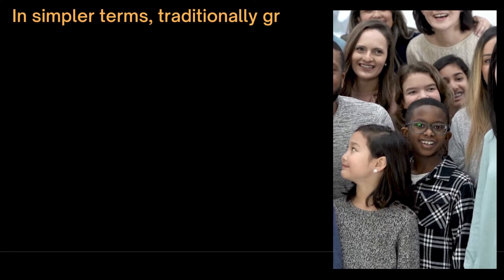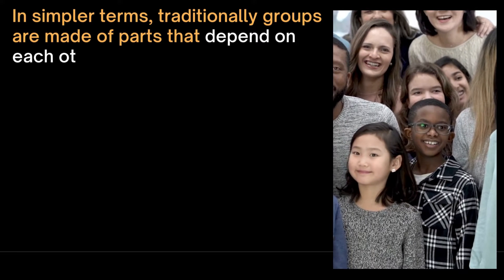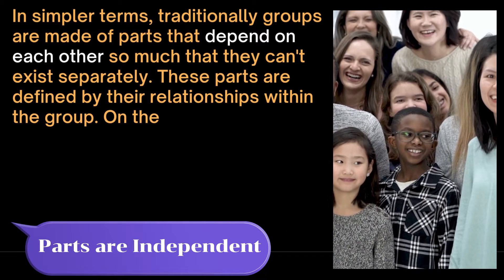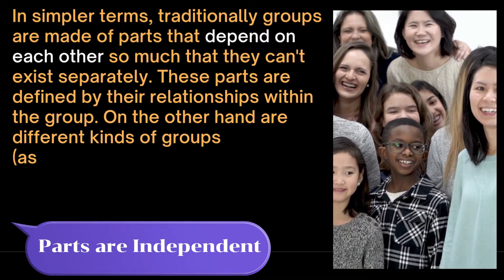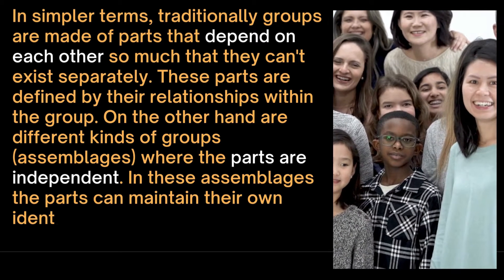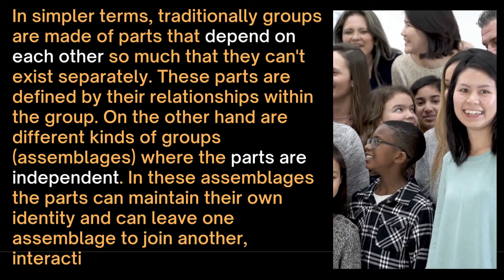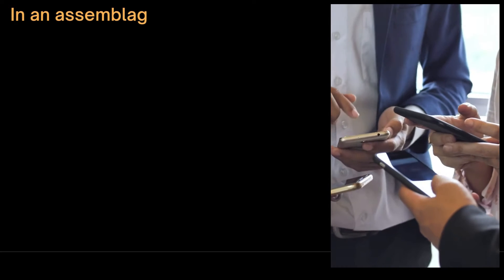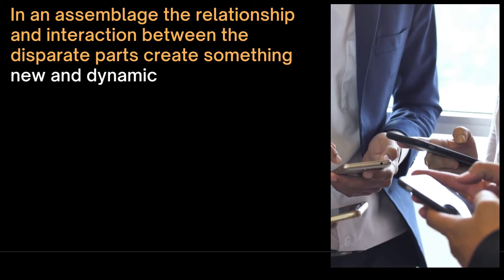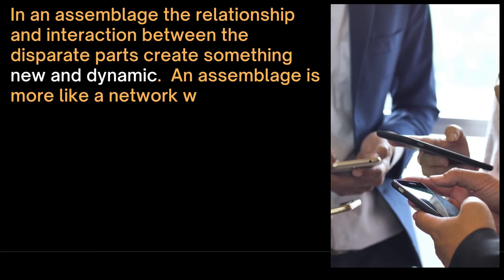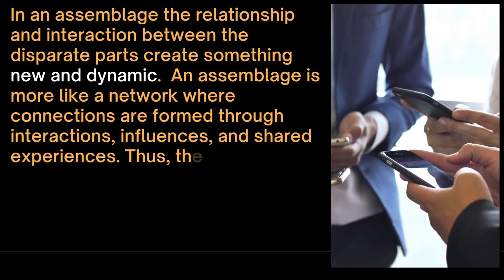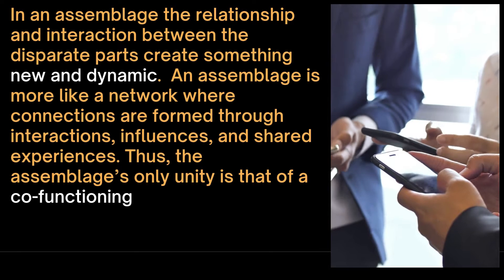In simpler terms, traditionally groups are made up of parts that depend on each other so much that they can't exist separately — these parts are defined by their relationships within the group. On the other hand, assemblages are different kinds of groups where the parts are independent. In these assemblages, the parts can maintain their own identity and can leave one assemblage to join another, interacting in new ways. In an assemblage, the relationship and interaction between disparate parts create something new and dynamic. An assemblage is more like a network where connections are formed through interactions, influences and shared experiences. Thus, the assemblage's only unity is that of a co-functioning.